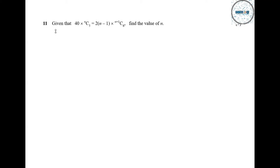We are going to do question number 11. Given that 40 multiplied by nC5 is equal to 2n minus 1 multiplied by n+1C6, find the value of n.